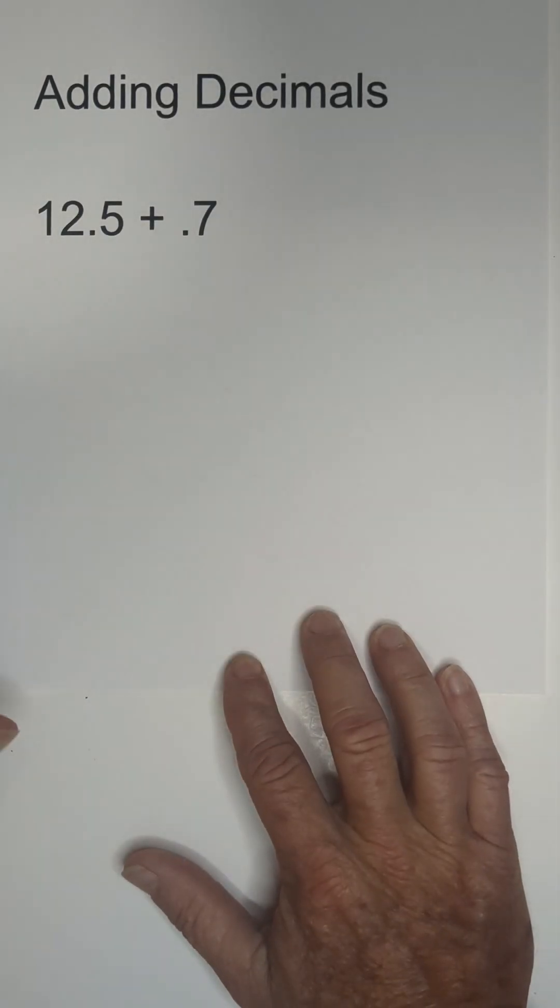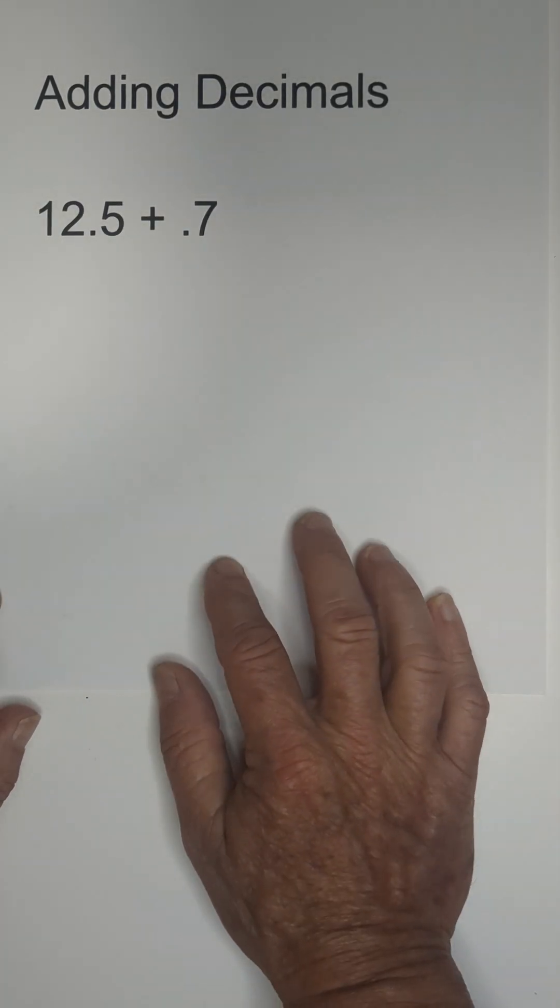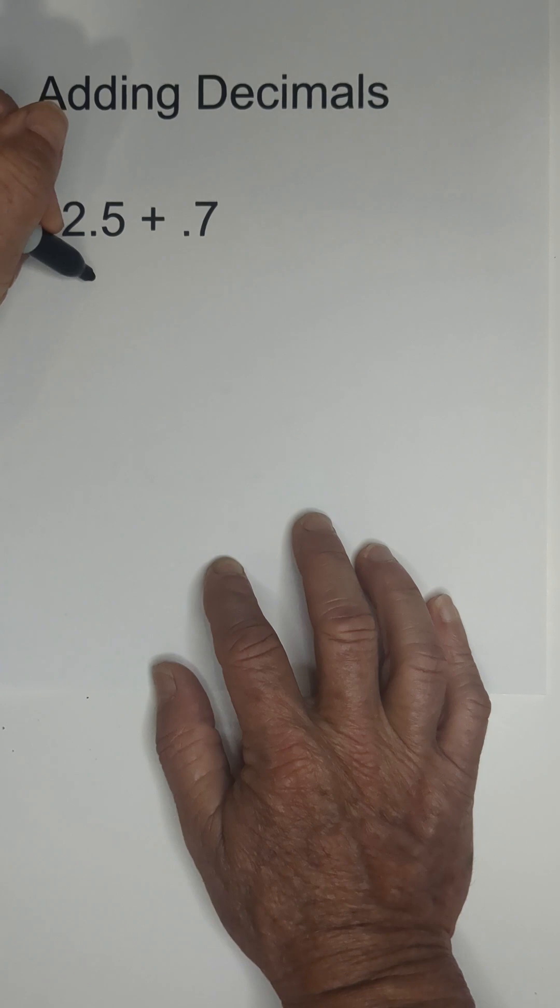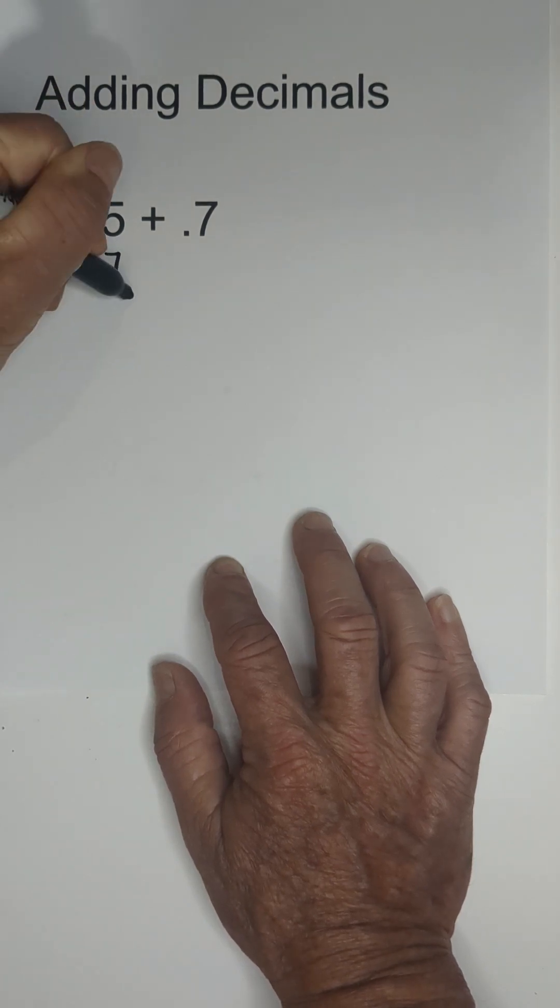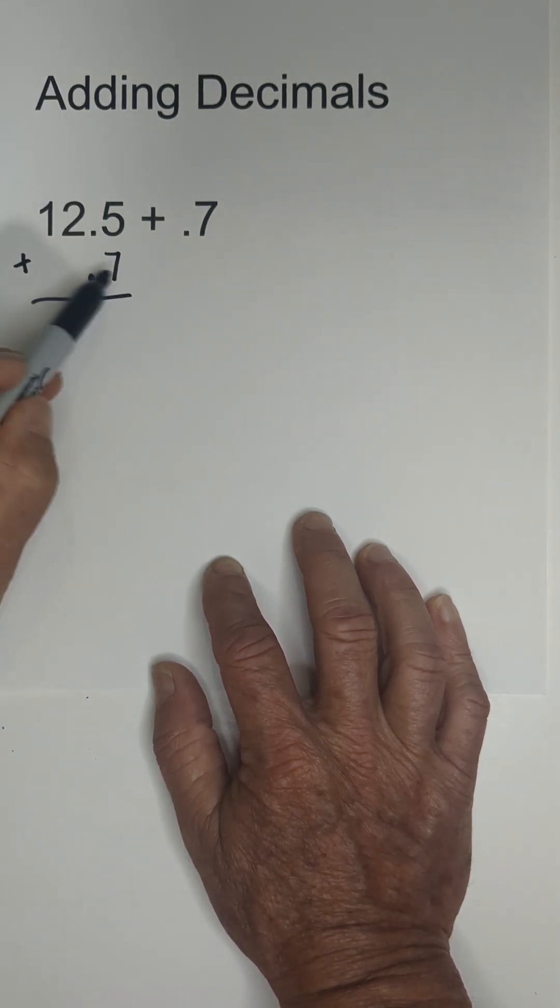How do you add 12 and 5 tenths plus 7 tenths? The most important thing is just line up the decimal. So now we have 12 and 5 tenths plus 7 tenths. Just go ahead and add normally.